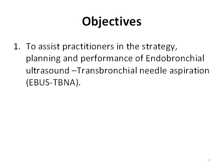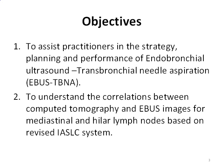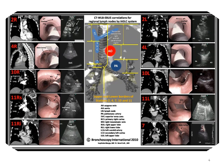The objectives of this lesson are to assist practitioners in the strategy, planning, and performance of EBUS-TBNA, and to help practitioners understand the correlations between chest computed tomography, EBUS, and white-light bronchoscopy for sampling mediastinal and hilar lymph nodes. While this poster addresses most of the lymph node stations identified on the IASLC map, only one example will be used to illustrate how the poster helps prepare for EBUS-TBNA.